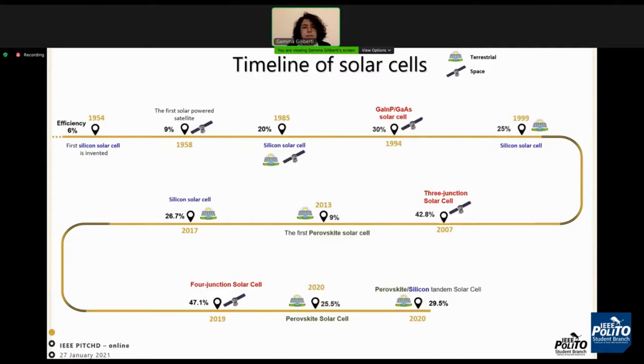It had an efficiency of 6%. Just 30 years later, it showed an efficiency of 20% in 1985. Today, the highest efficiency of 47.1% is achieved by multi-junction solar cells based on 3-5 semiconductor materials.